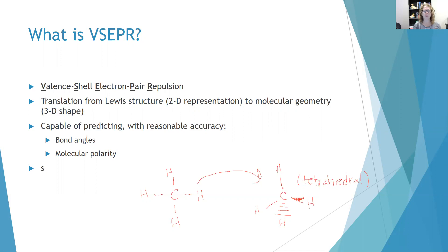With reasonable accuracy, VSEPR can tell you the bond angle. So it can tell you that the bond angle between this carbon and this hydrogen and this hydrogen is 109.5 degrees. And it can tell you that a molecule is what's called polar or nonpolar, which is going to mean some important things for their properties later.